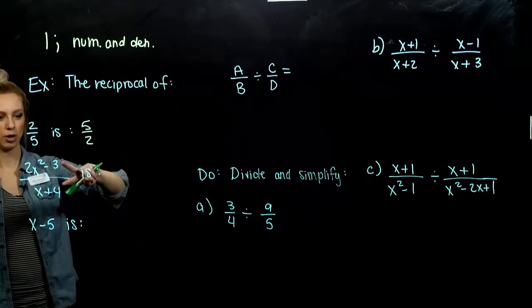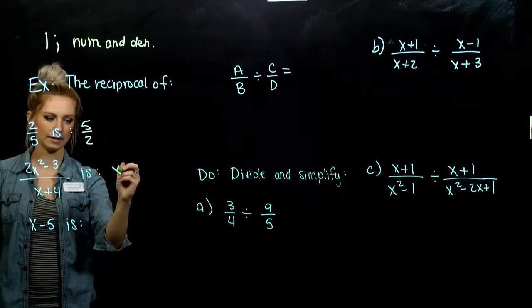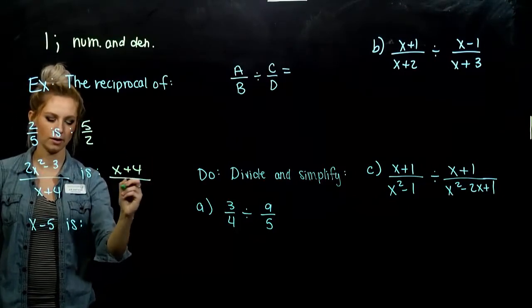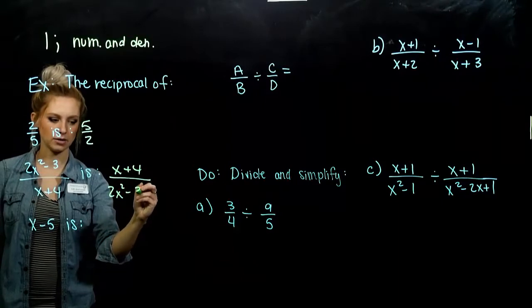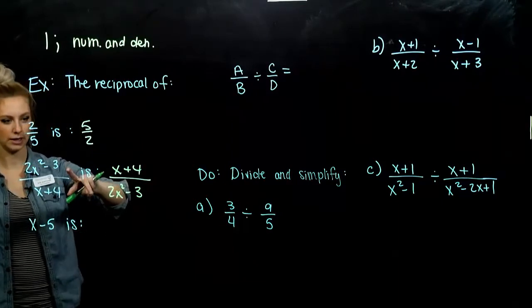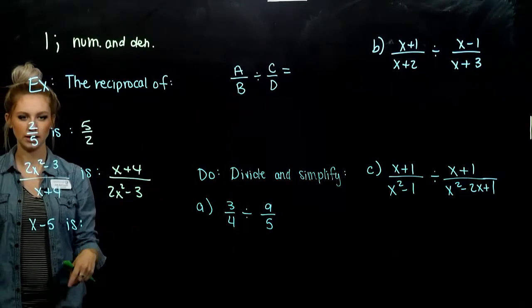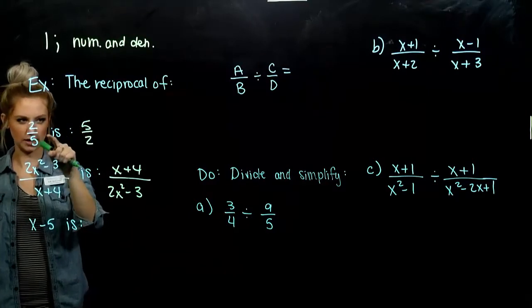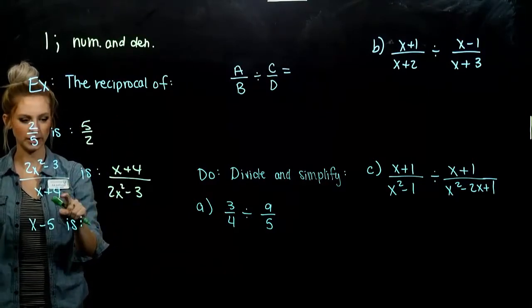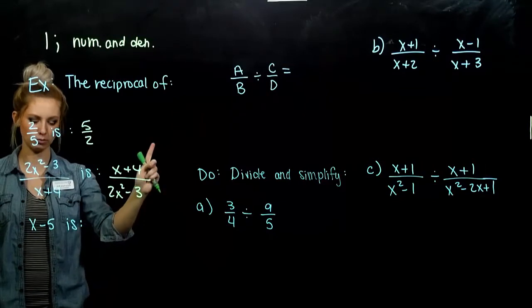The reciprocal of this rational expression is flipping it upside down. So x plus 4 becomes the numerator. And 2x squared minus 3 is now the denominator. Taking it, flipping it upside down. And you can see if we multiply these together, we get out 1. If I multiply these together, everything cancels, we get out 1.